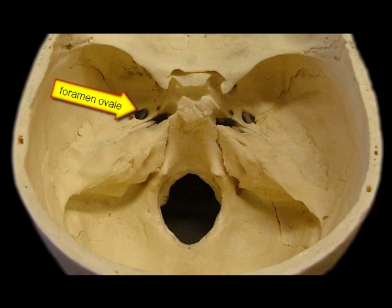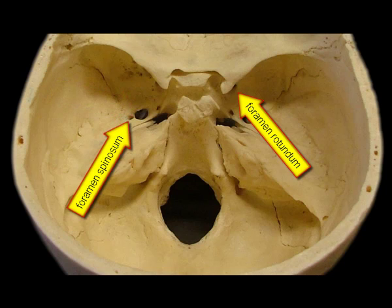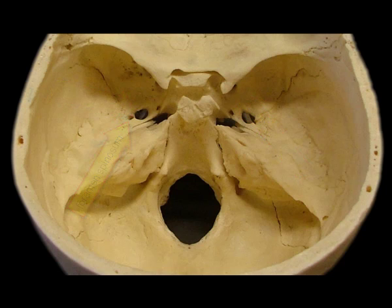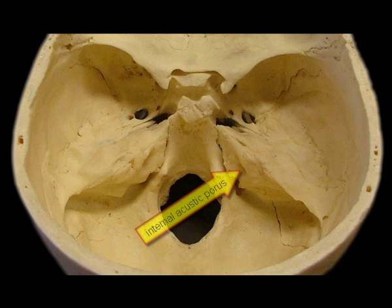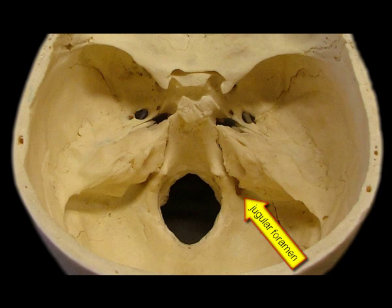The optic canal carries the optic nerve and the ophthalmic artery to the eye. The foramen ovale, rotundum, and spinosum contain divisions of the trigeminal nerve. The internal acoustic porus carries the facial and the vestibulocochlear nerves. Venous blood leaves the skull via the jugular foramen, and the same foramen also carries the 9th, 10th, and 11th cranial nerves.